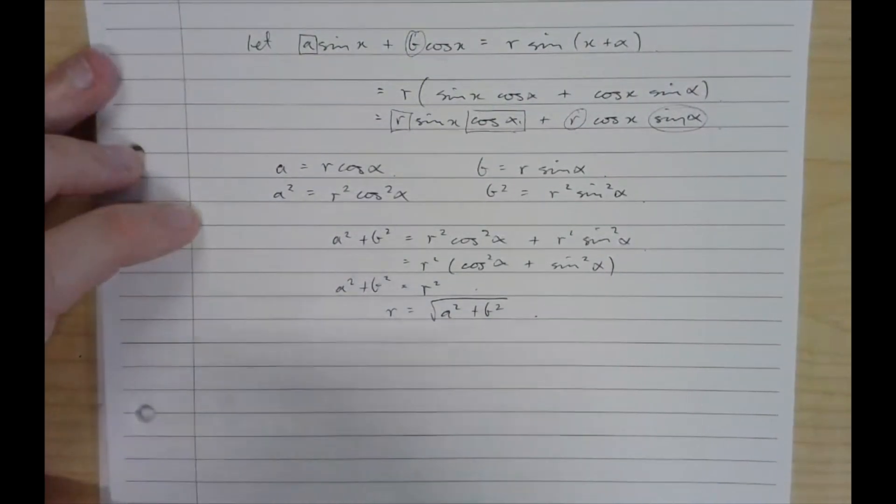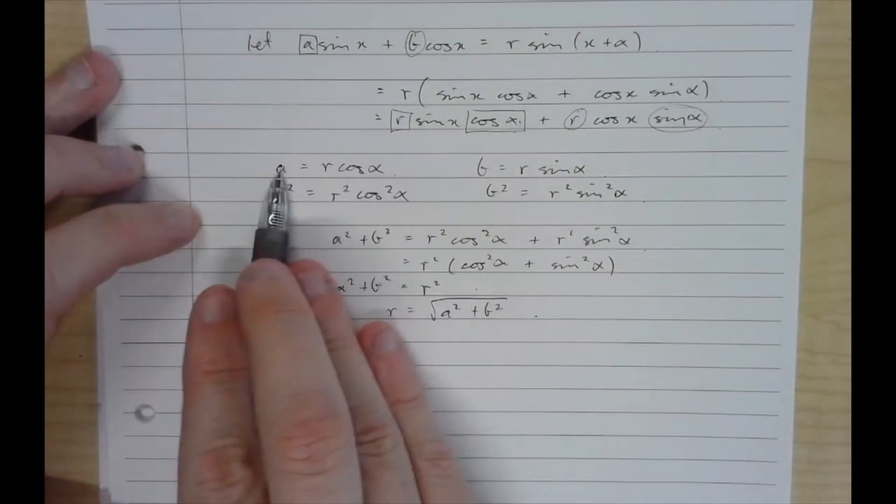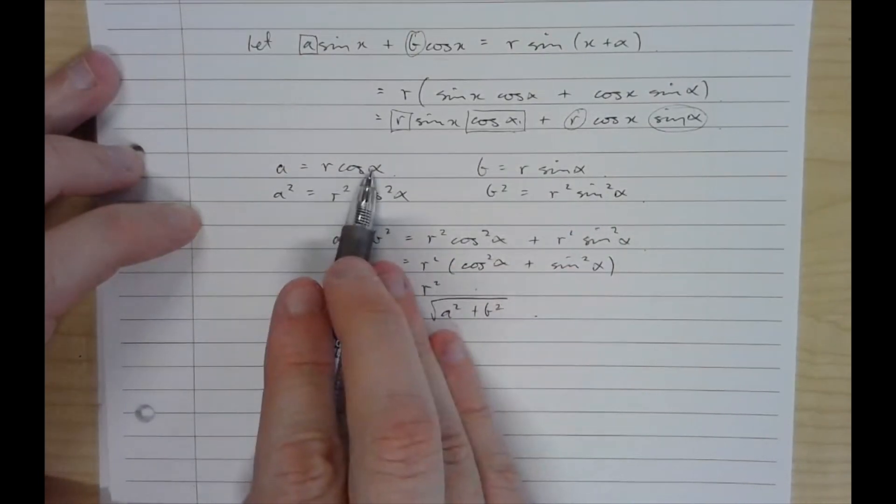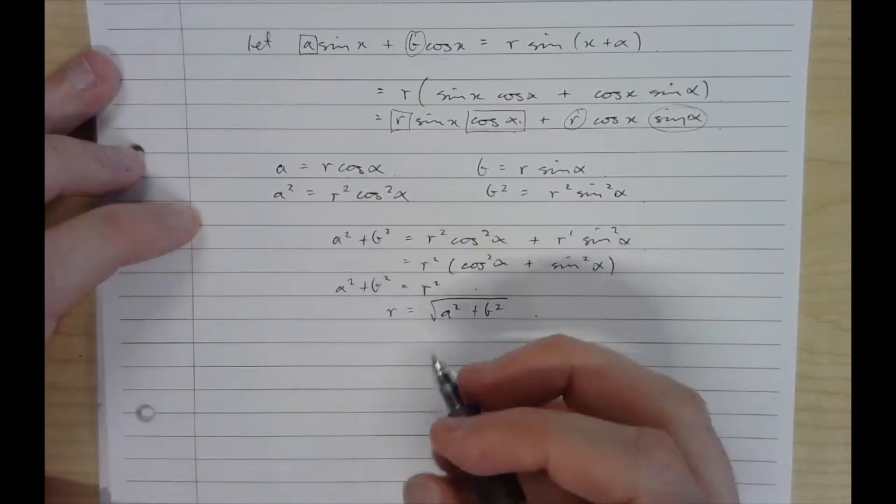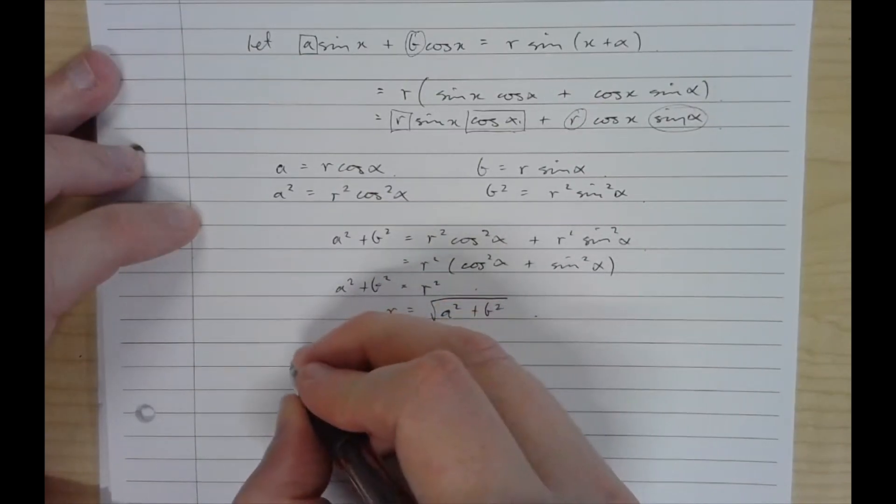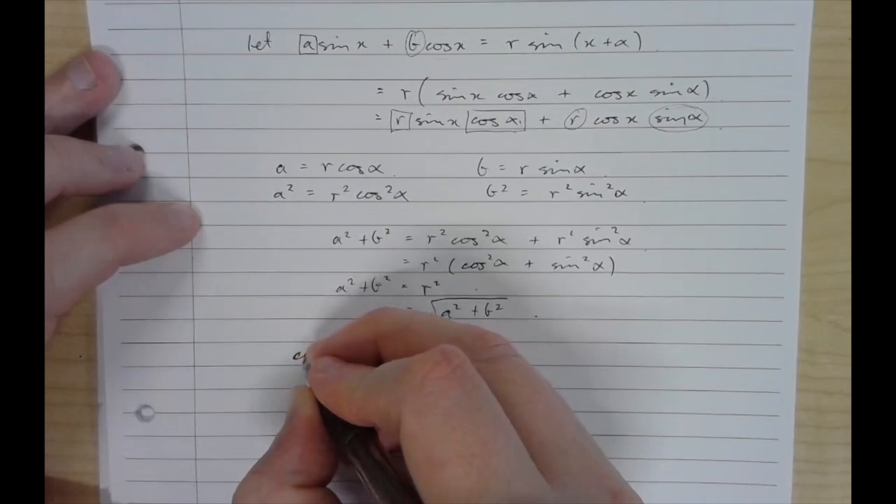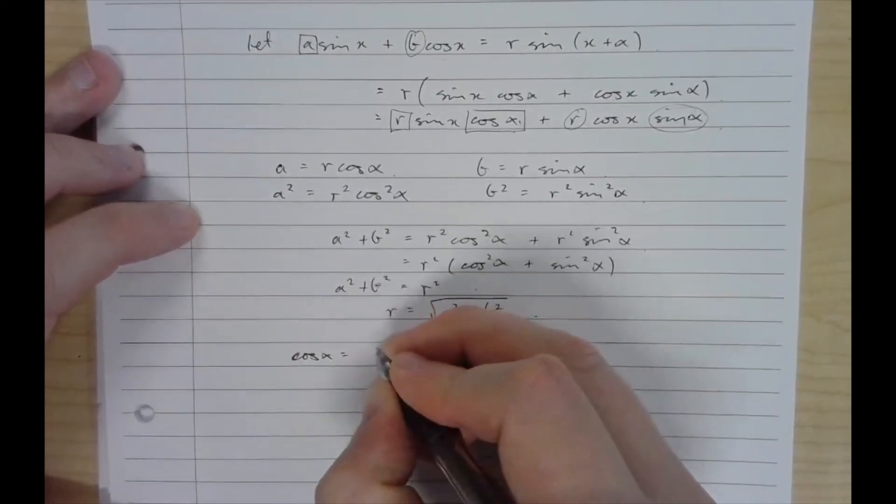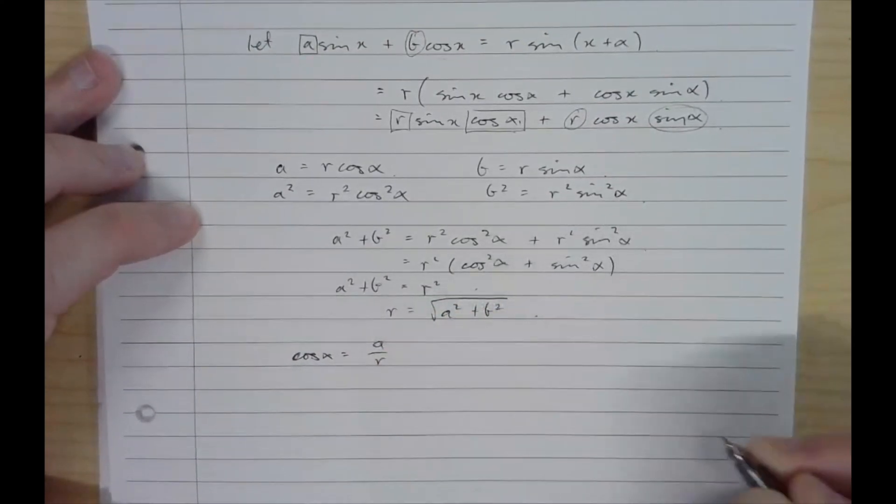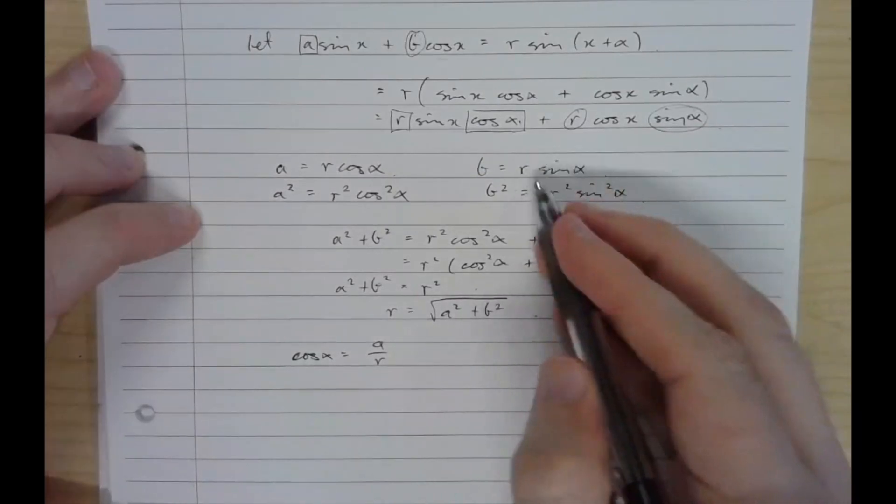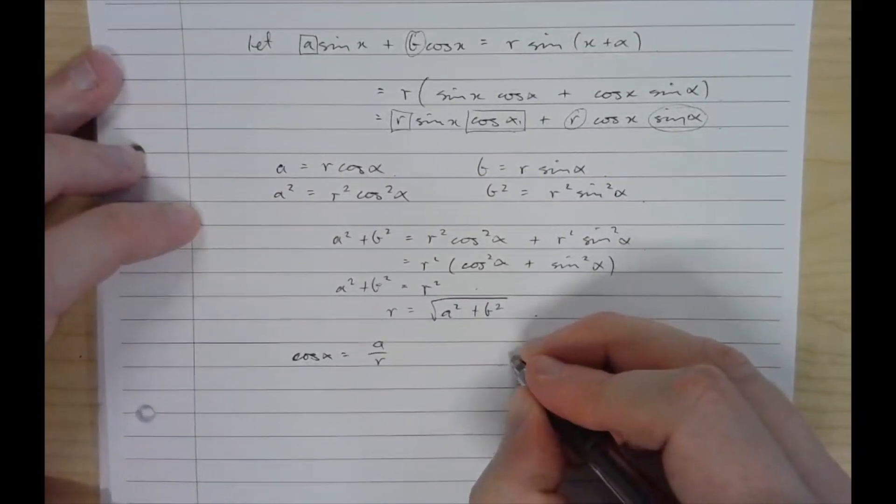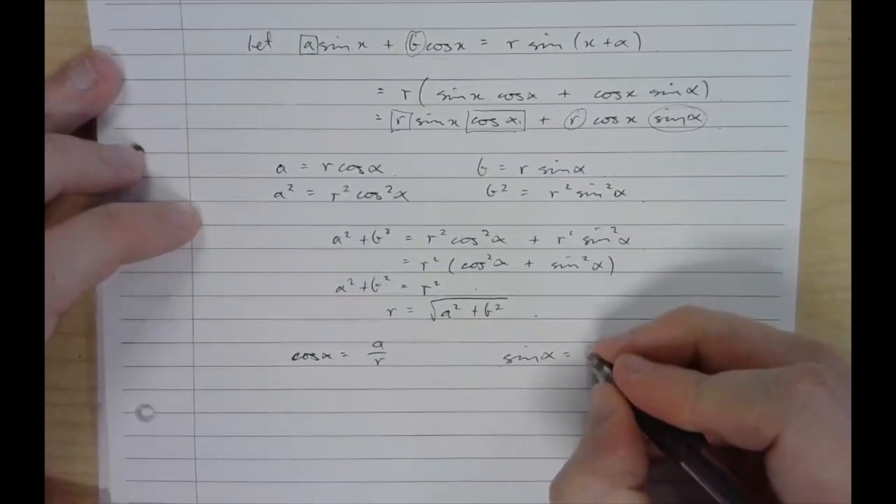We haven't found alpha yet. Go back up here to our result with the coefficients. So A is R cos alpha, so cos alpha is A over R. Do the same thing with the second equation. Sine alpha is B over R.